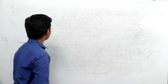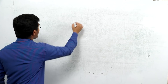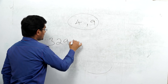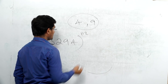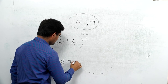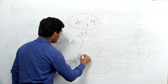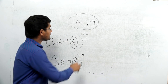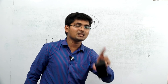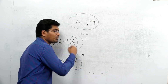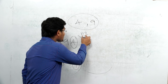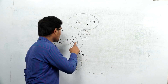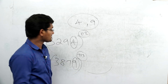Now for digits 4 and 9, the unit digit follows a cycle of 2. For example: 4 raised to 1 is 4, 4 raised to 2 is 16 (unit digit 6), 4 raised to 3 is 64 (unit digit 4). Similarly 9 raised to odd power ends in 9, even power ends in 1.